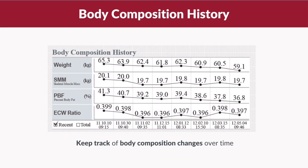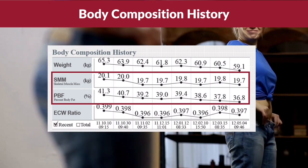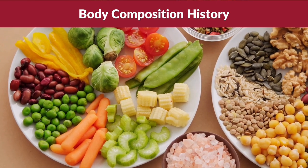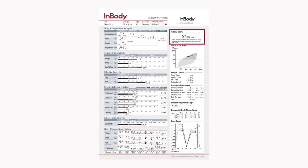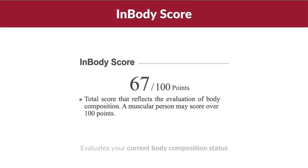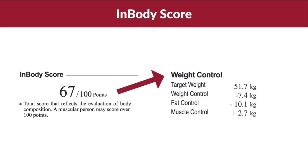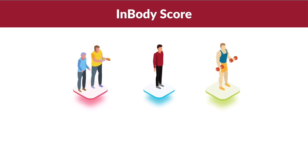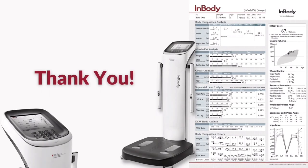At the very bottom of the result sheet, we have the body composition history, which can help you keep track of your body composition changes over time. By knowing how your muscle mass and body fat have changed over time, it can give you a more accurate understanding of how well your diet or exercise regime is working for you. The InBody score is an evaluation of your current body composition status based on your current muscle and fat condition, so basically if you have more muscle mass you will have a higher InBody score.